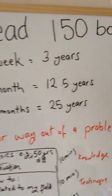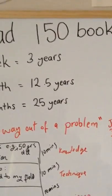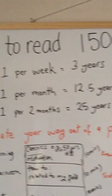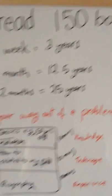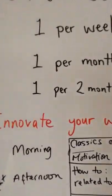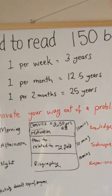Read one per month, that's 12.5 years. Now that's very long actually. And if you read one per two months, that's going to be 25 years.